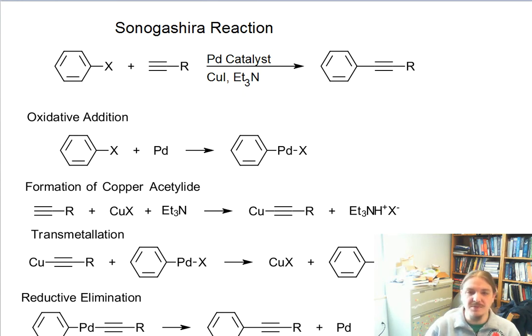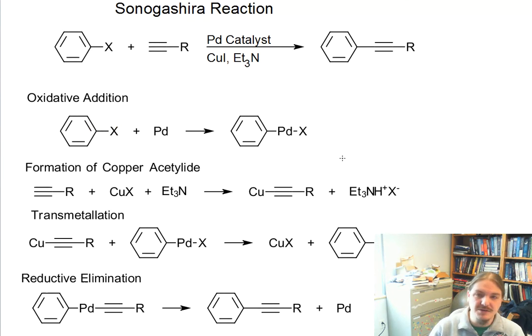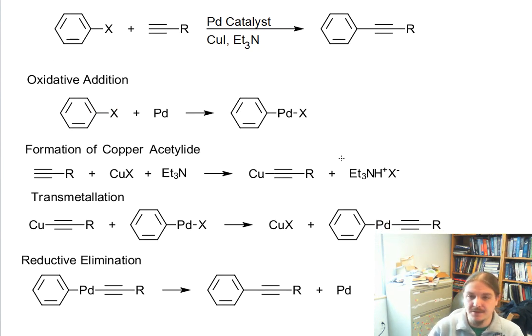There are two sort of preparatory steps that need to happen before the main event. One of them is called oxidative addition. In the oxidative addition step, the palladium reacts with the carbon-halogen bond and inserts itself into the carbon-halogen bond. You're going to see I'm not going to draw any arrows here.